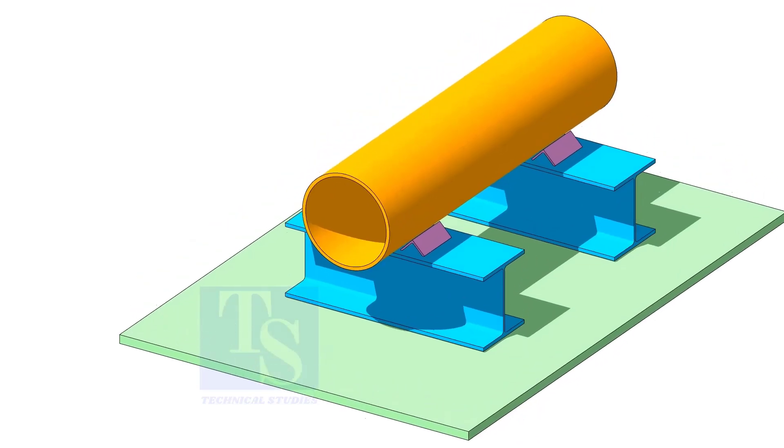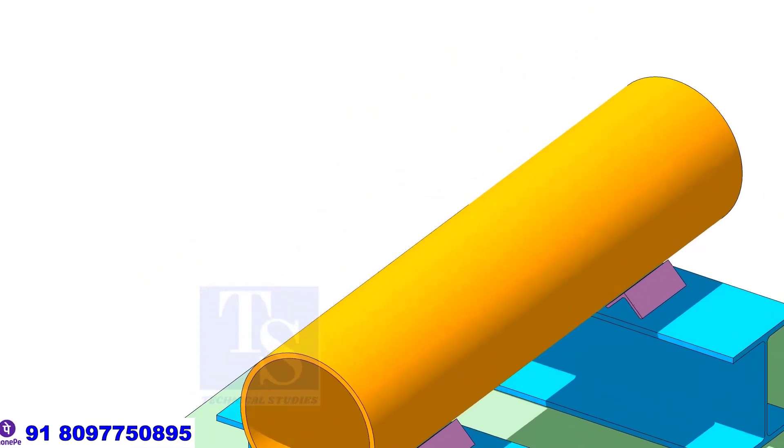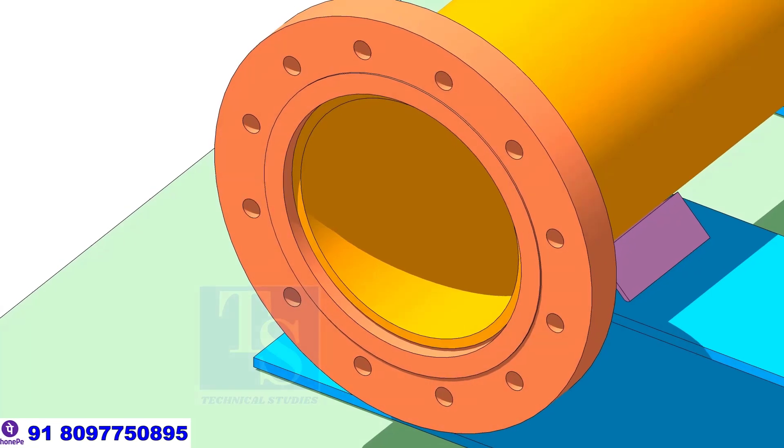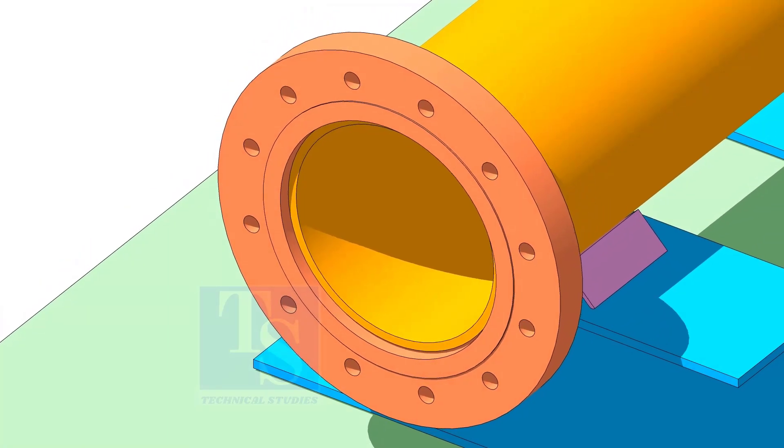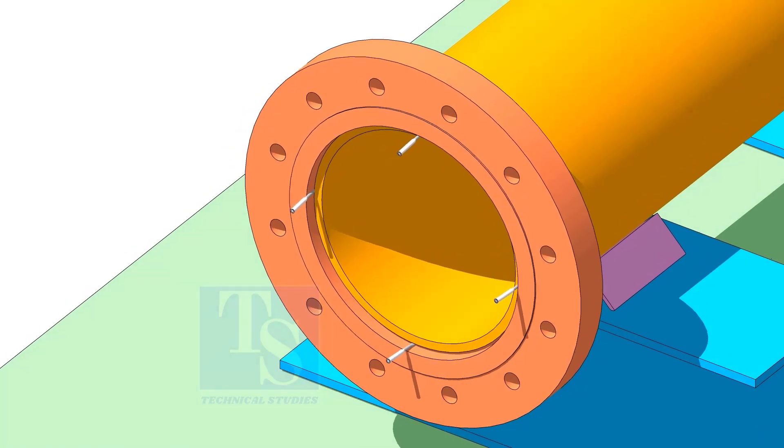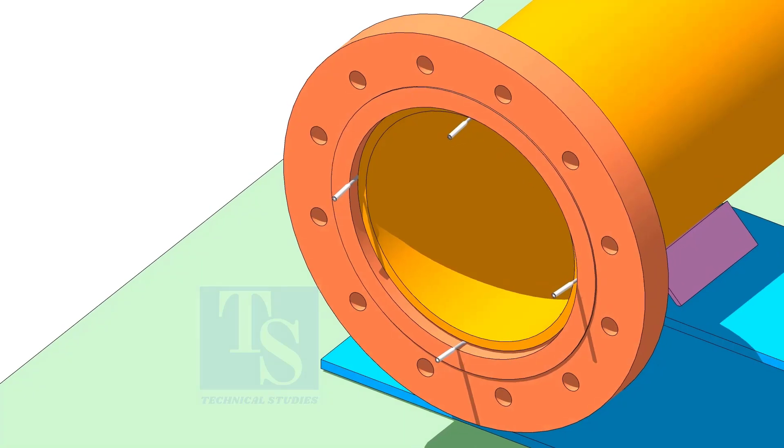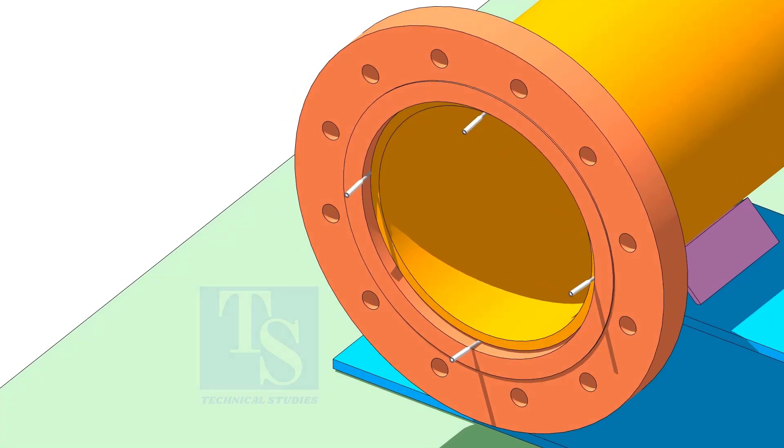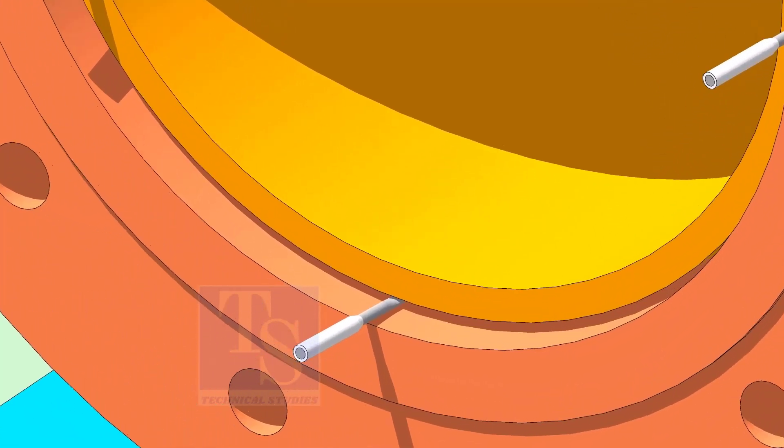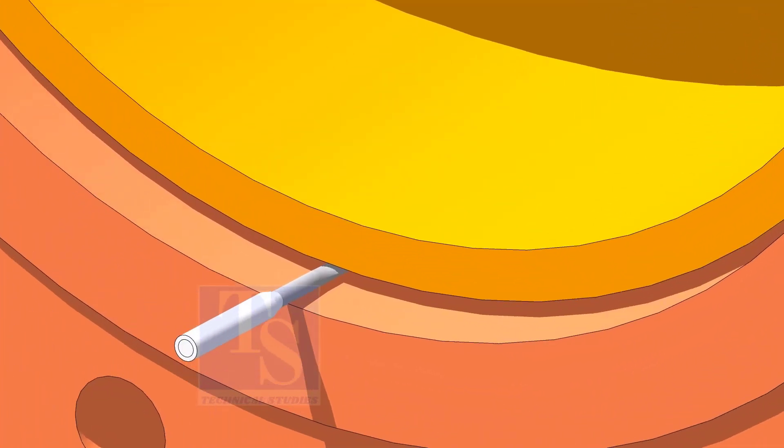Make sure both ends of the pipes are square. Put the flange in its position. Make small wedges from welding rod bits. Insert these wedges in the gap between the pipe and the flange as shown. Make sure the gap is distributed equally around the pipe.